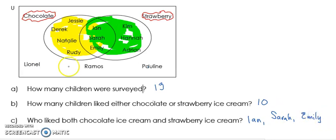All right. Now those are the questions that were given, but there are some other types of questions you could get. So they could ask a question like, who only likes strawberry ice cream? Only likes strawberry. And if we were talking about only liking strawberry, it would have to be Kim, Hannah and Adrian because we couldn't include Ian, Sarah and Emily because they like chocolate as well. But Kim, Hannah and Adrian like only strawberry.